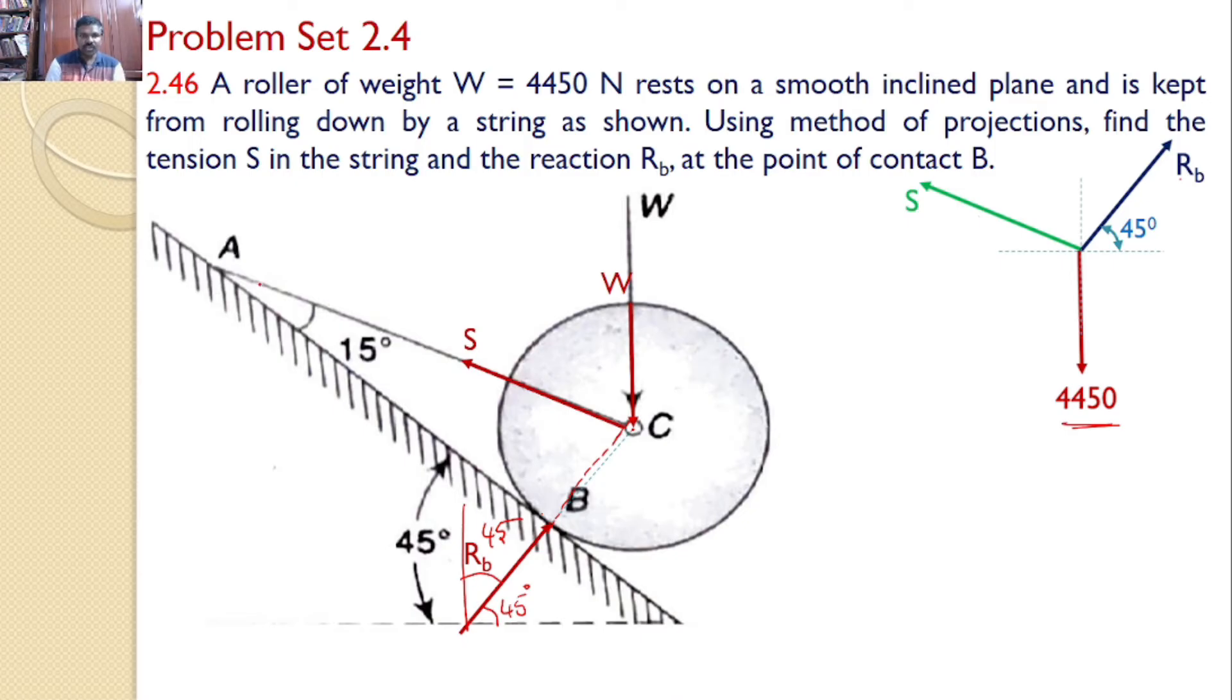Next, S force. We know that this inclined surface makes an angle of 45 degrees with the horizontal. So this angle is given as 45 degrees. This angle is given as 45 degrees. Hence this angle is also equal to 45 degrees.